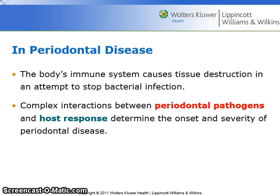In periodontal disease, the body's immune system causes tissue destruction in an attempt to stop bacterial infection. Complex interactions between periodontal pathogens and the host response determine the onset and severity of periodontal disease.